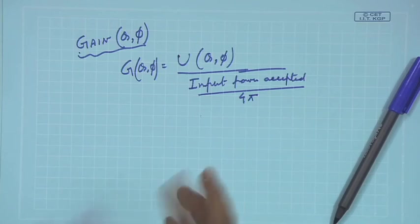Here input power is used, not the total power radiated. Whatever power has been given as input — there will be ohmic losses, impedance mismatch losses, and polarization mismatch losses in the antenna. After those losses, whatever is remaining and actually radiated is what the gain function captures.